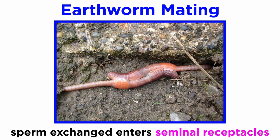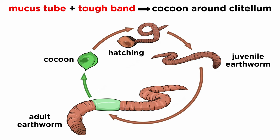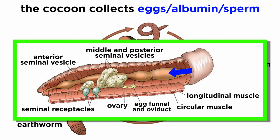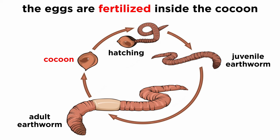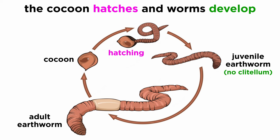Copulation may take several hours, after which each worm's seminal receptacle houses their partner's sperm. Afterwards, each worm will create a mucus tube and a tough band that forms a cocoon around the clitellum. The cocoon then passes anteriorly towards the worm's head. As it moves, it collects eggs from the oviducts, albumin from skin glands, and stored sperm from the worm's mate. Within the cocoon, the eggs are fertilized. Eventually it passes over the anterior end of the worm and its ends close, forming a seal. The fertilized eggs develop directly in the cocoon and tiny juvenile worms hatch. They will develop their clitellum when they are sexually mature.